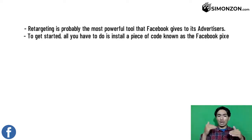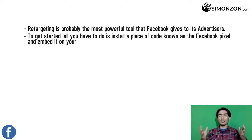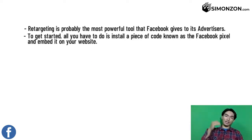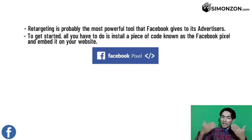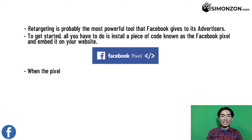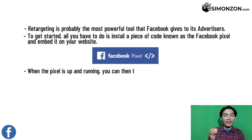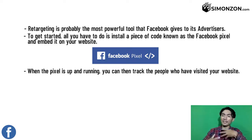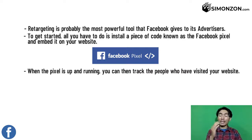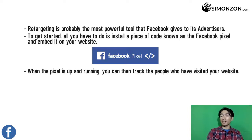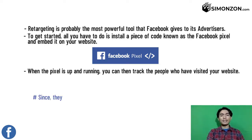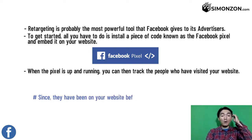To get started with Facebook retargeting, all you have to do is install the Facebook Pixel — a piece of code — on your website. When the pixel is up and running, you can then track the people who have visited your website.